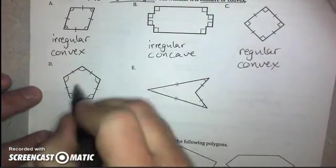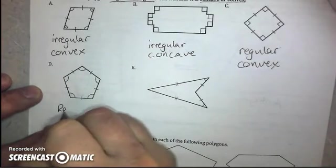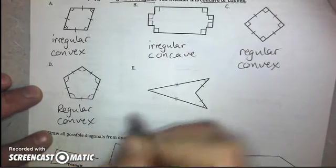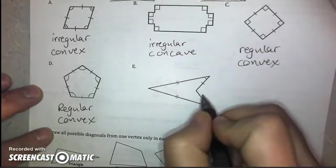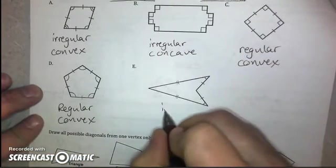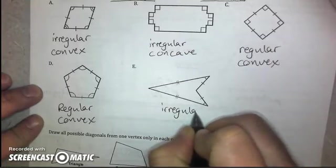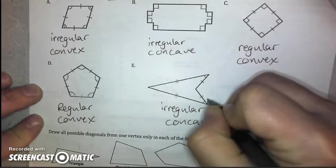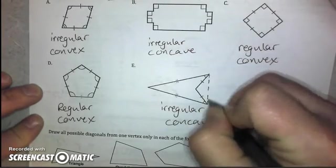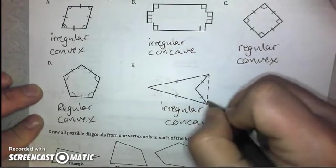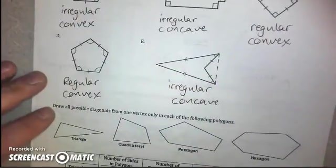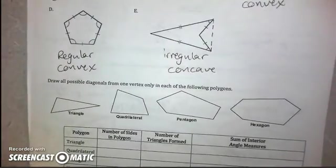Part D is regular convex. And part E is concave, and therefore must be irregular. This diagonal, connecting these two vertices, goes through the exterior of the shape. That means it's concave.